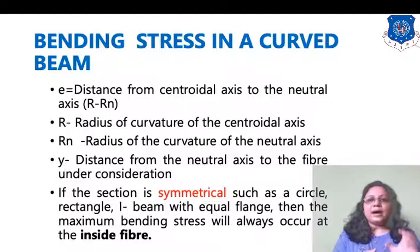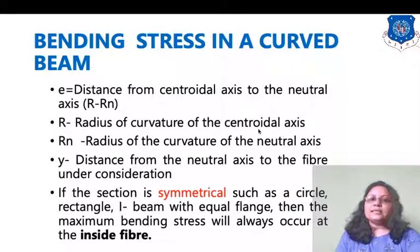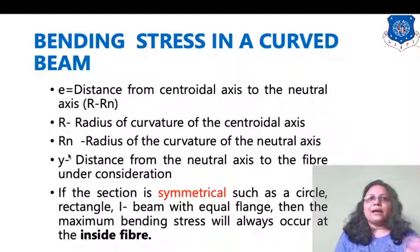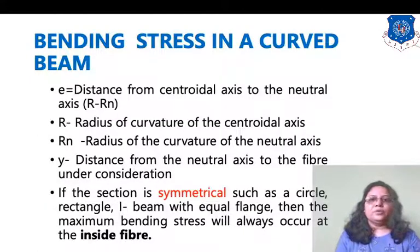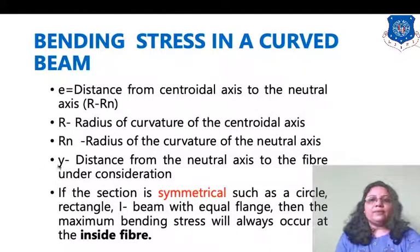The parameter r indicates the radius of curvature of the centroidal axis. Similarly, rn stands for the neutral axis, so rn is the radius of curvature of the neutral axis. The parameter y is the distance from the neutral axis to the fiber under consideration.